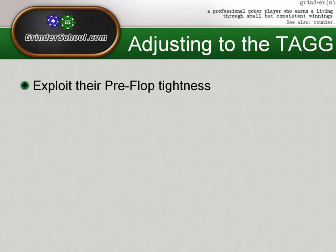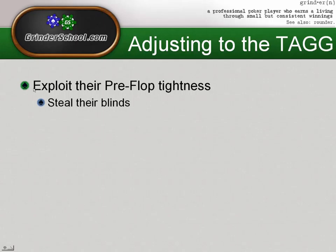The first way to exploit the fact that tags play very tight pre-flop is to constantly steal their blinds. When seat selecting properly, it's great to have one or two tags or nits immediately to our left, because this makes stealing blinds extremely easy. If both players have a fold-to-button-steal from the small and big blind of somewhere in the 85 to 90% range — typical for tight players — our button steals are going to work anywhere in the range of 65 to 80% of the time, which is obviously going to be profitable. Opening 75% of hands on the button when it's folded to us with two nitty players in the blinds is certainly immediately profitable.